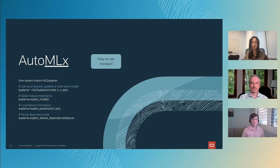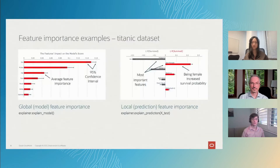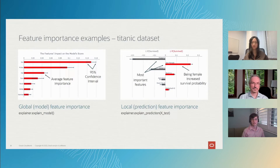Let's talk first about feature importance. We use the Titanic dataset as an example, where we're trying to predict whether or not a passenger died or survived the Titanic. On the left, we're showing the global or model-level feature importance — the overall importance of the features.